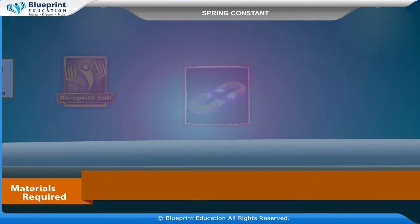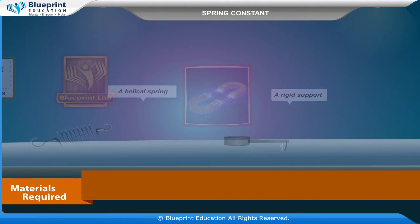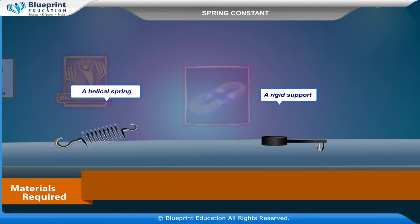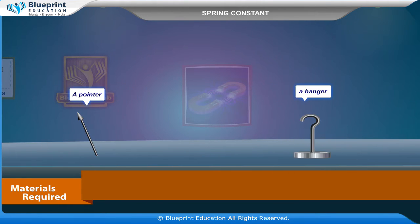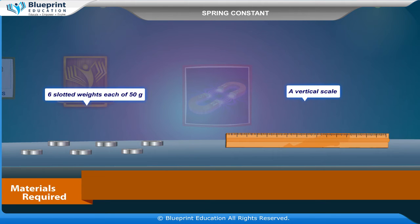The materials required are: a helical spring, a rigid support, a pointer, a hanger, six slotted weights each of 50 grams, and a vertical scale.